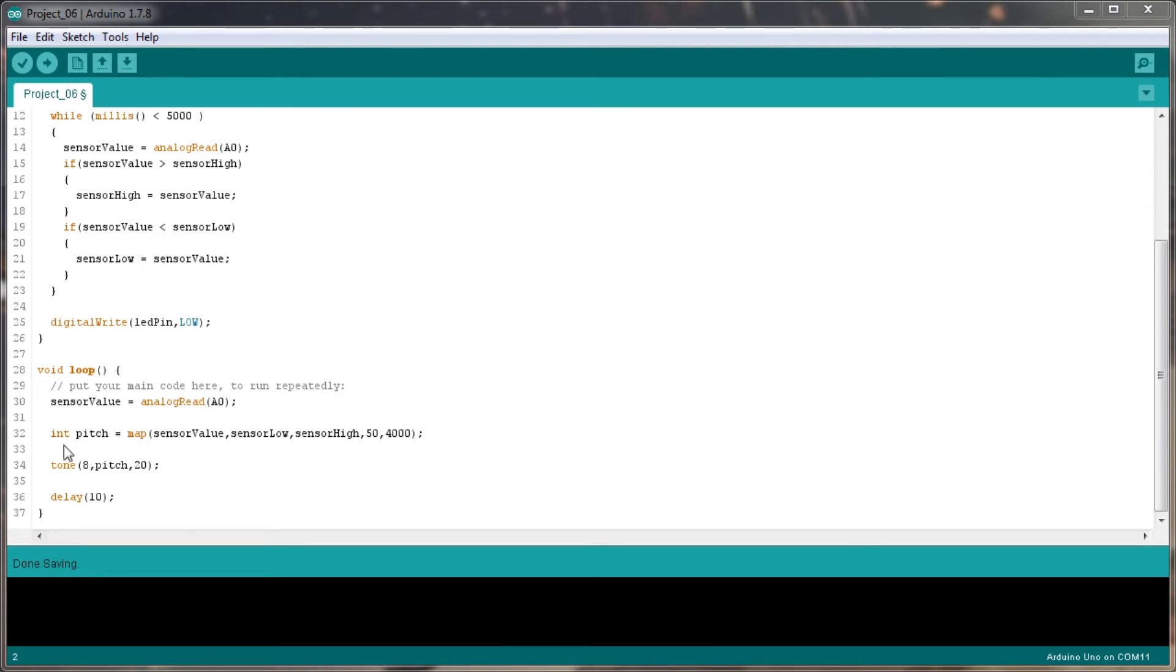Then for our loop, we're setting the sensor value to equal the analog read of analog port zero, which is the photosensor. Then we're going to set the pitch as a map of the sensor value between the sensor low and the sensor high. We're going to create a tone based on that pitch and then we're going to output it hopefully.